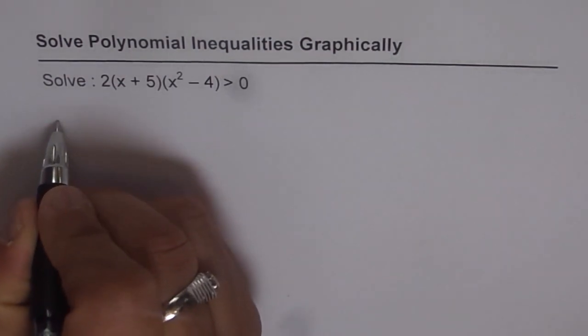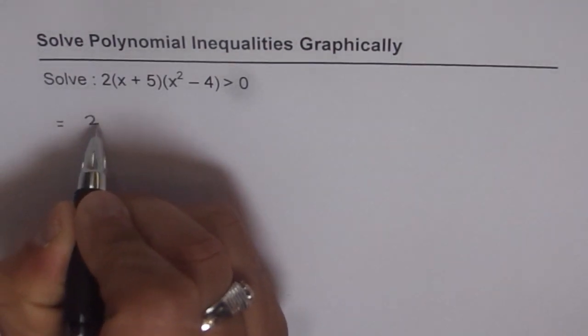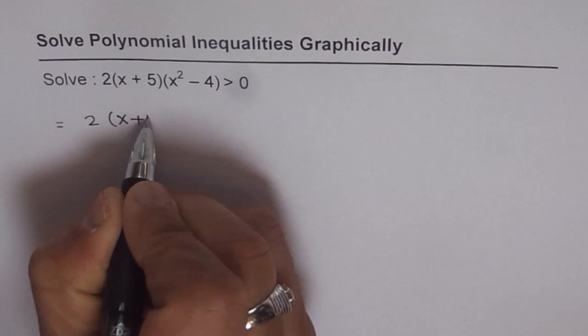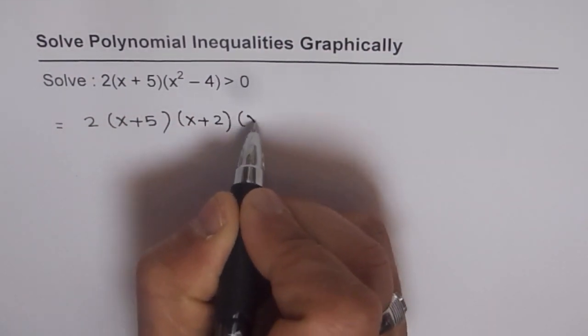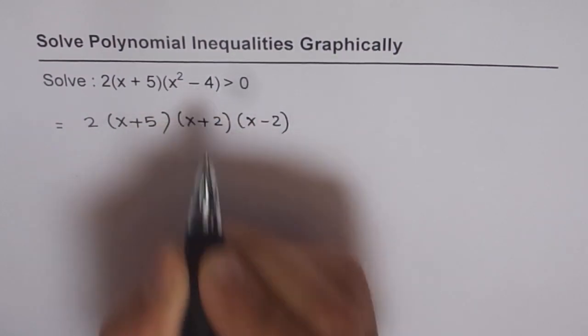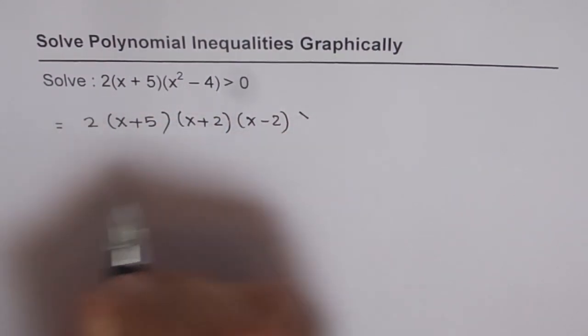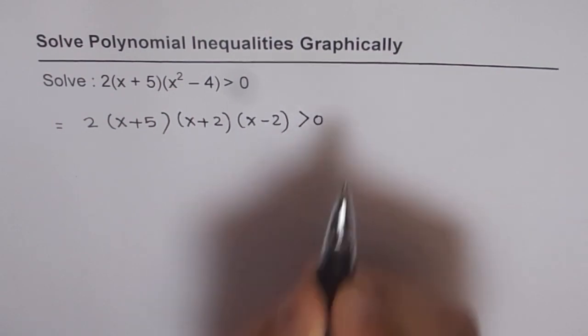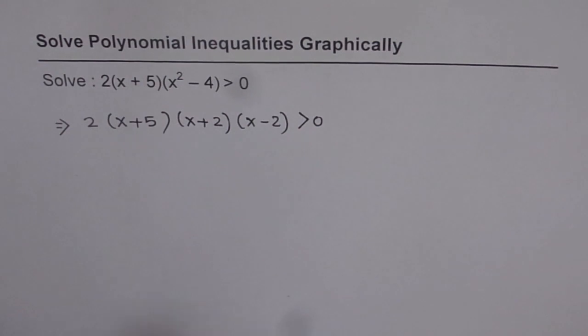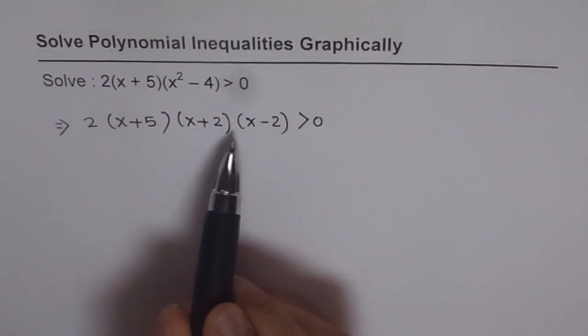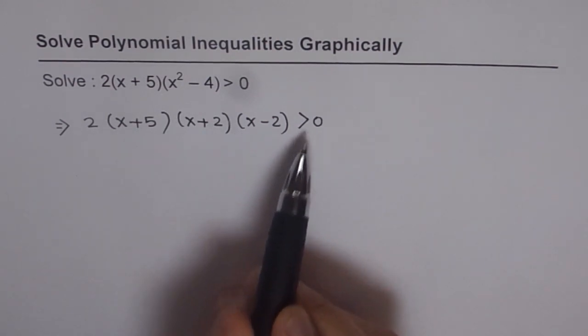So we can write this equation as equal to 2 times x plus 5 times x plus 2 times x minus 2. This is difference of squares as you can recognize, right? So this equation should be greater than 0. So let me use this side implies. So this implies that 2 times x plus 5 times x plus 2 times x minus 2 is greater than 0. That is the polynomial equation which we need to solve.